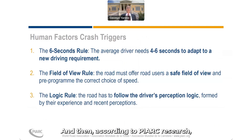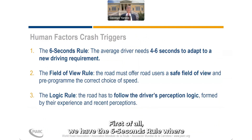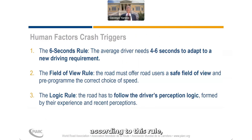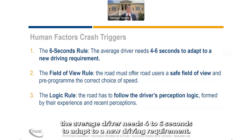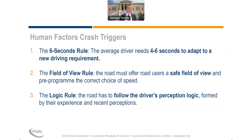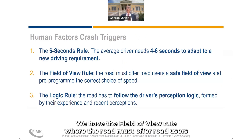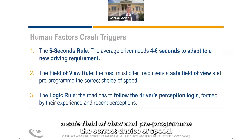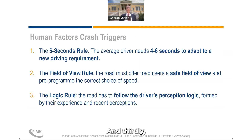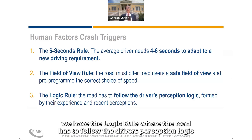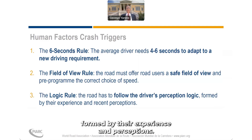According to PRC research, there are key crash triggers. First, we have the six-second rule, where the average driver needs four to six seconds to adapt to a new driving requirement. Second, we have the field of view rule, where the road must offer road users a safe field of view and pre-program the correct choice of speed. Third, we have the logic rule, where the road has to follow the driver's perception logic, formed by their experience and recent perceptions.